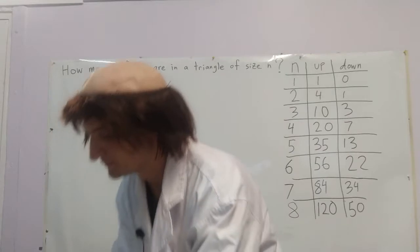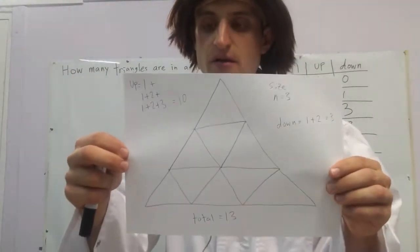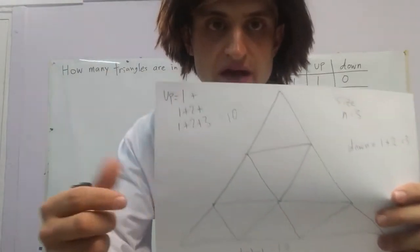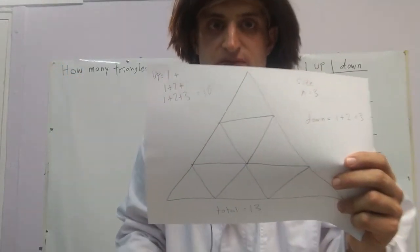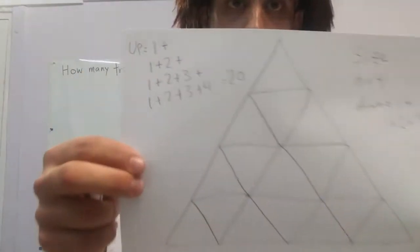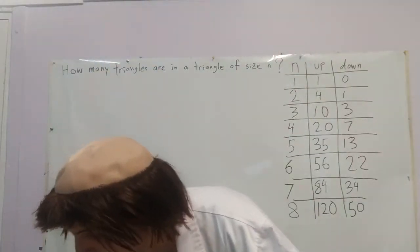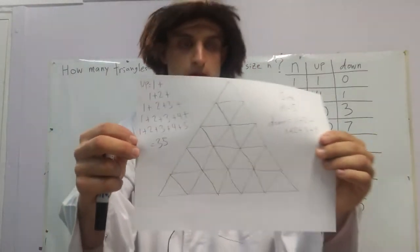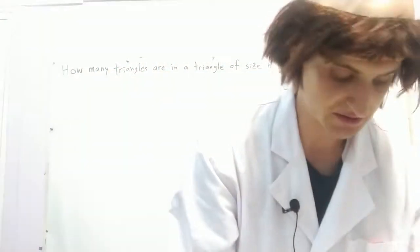On to size 3. Can you start to see a pattern? Math is all about finding patterns. For the ones going up we've got 1 plus 1 plus 2 plus 1 plus 2 plus 3, and on and on. That gives us enough to develop a formula for the ones going up.